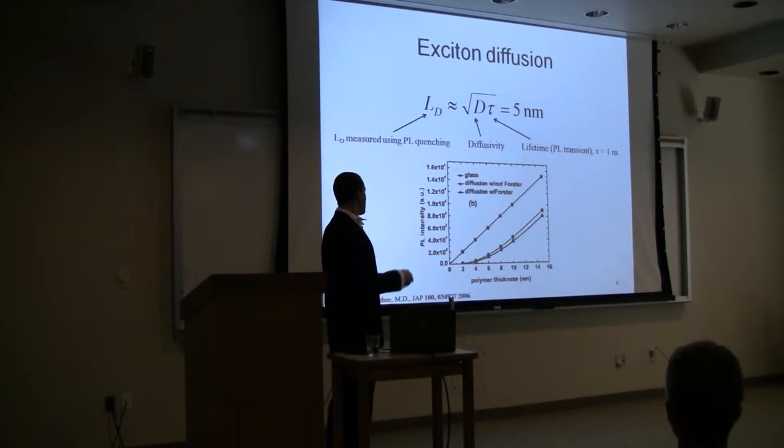The exciton diffusion length can actually be measured through an experiment where we look at photoluminescence quenching on either a non-quenching substrate like glass or a quenching substrate like anything that can accept an electron from the exciton.